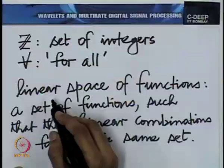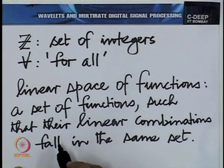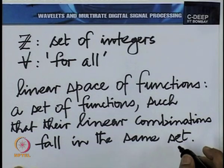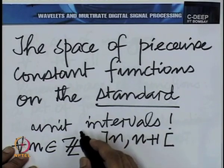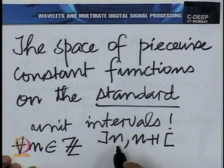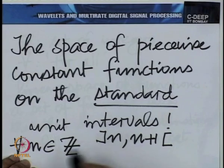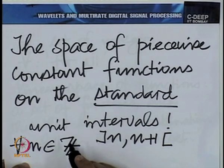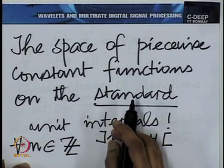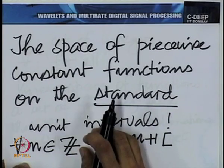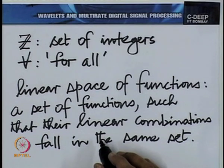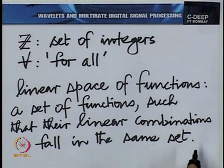A linear space of functions is one in which any linear combination of functions in that set falls back into the same set. In the space of piecewise constant functions on the standard unit intervals — open intervals of the form (n, n+1) for all n over the integers — when we talk about linear combinations, we are essentially referring to finite linear combinations, just as a clarification for the moment.